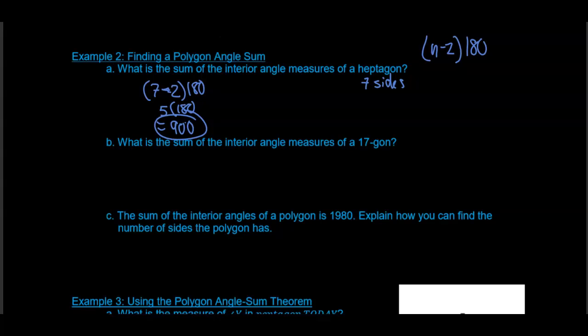Interestingly, heptagon would be the Greek. You could also do it in the Latin, which would be septagon. What is the sum of the interior angles of a 17-agon? So this would be (17 minus 2) times 180. 17 minus 2 is 15, and 15 times 180 is 2,700. So the sum of the angles would be 2,700 degrees.